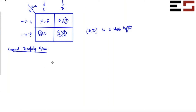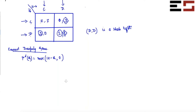I'll give you the demand function, and then you have to figure out the best response functions. Suppose the inverse demand function is max of (12 minus Q) comma 0, and firms choose Q1 and Q2 to maximize profit. Let's assume that the cost function is 0.